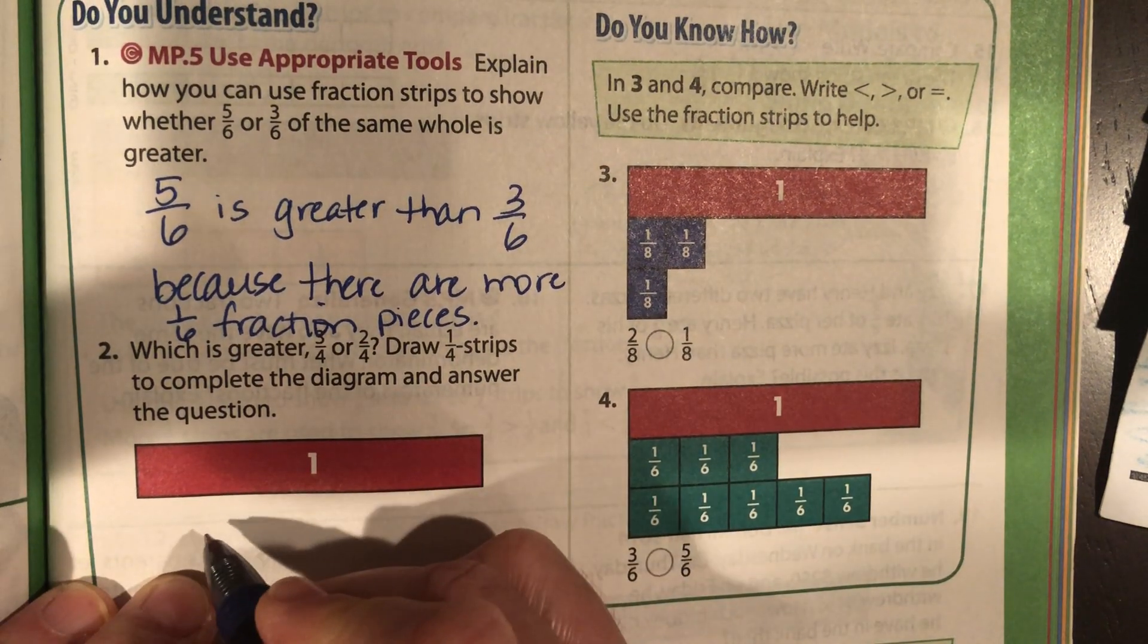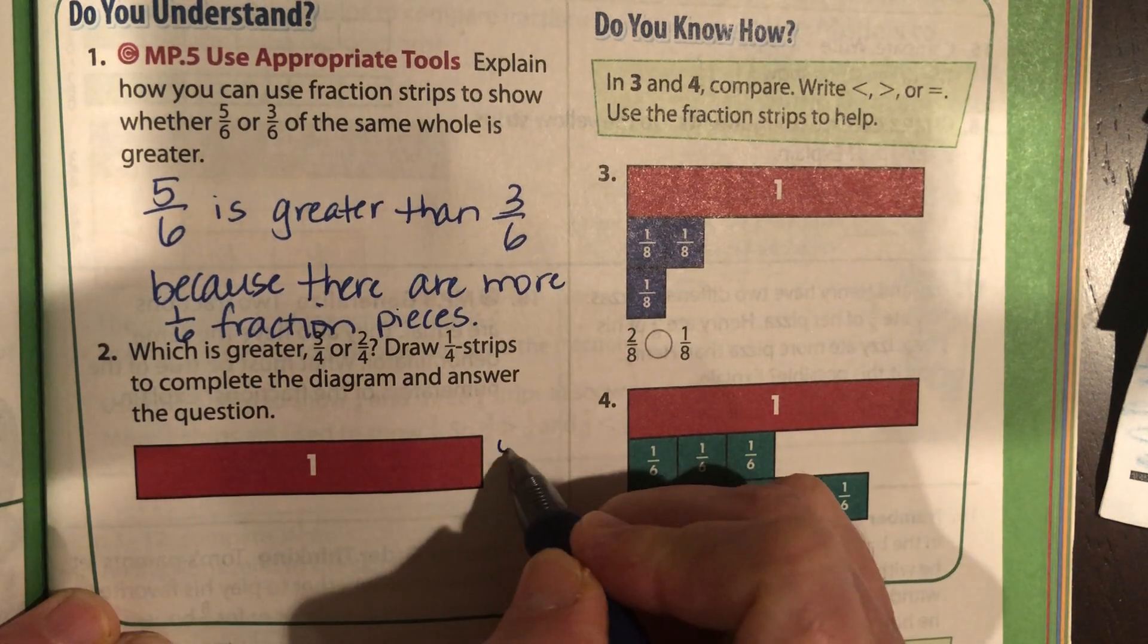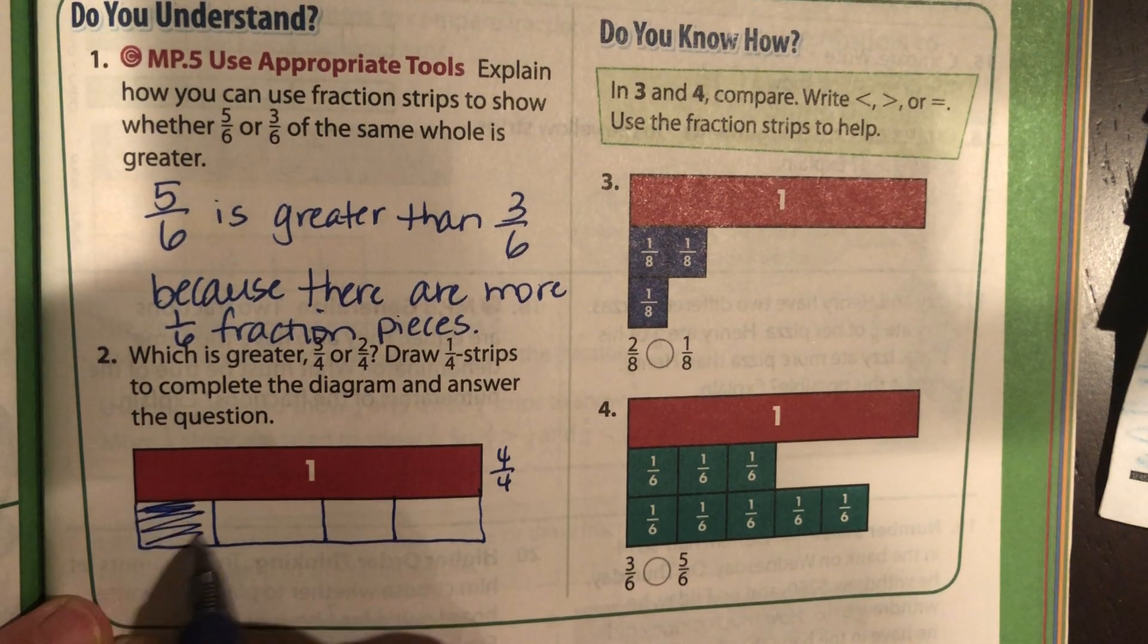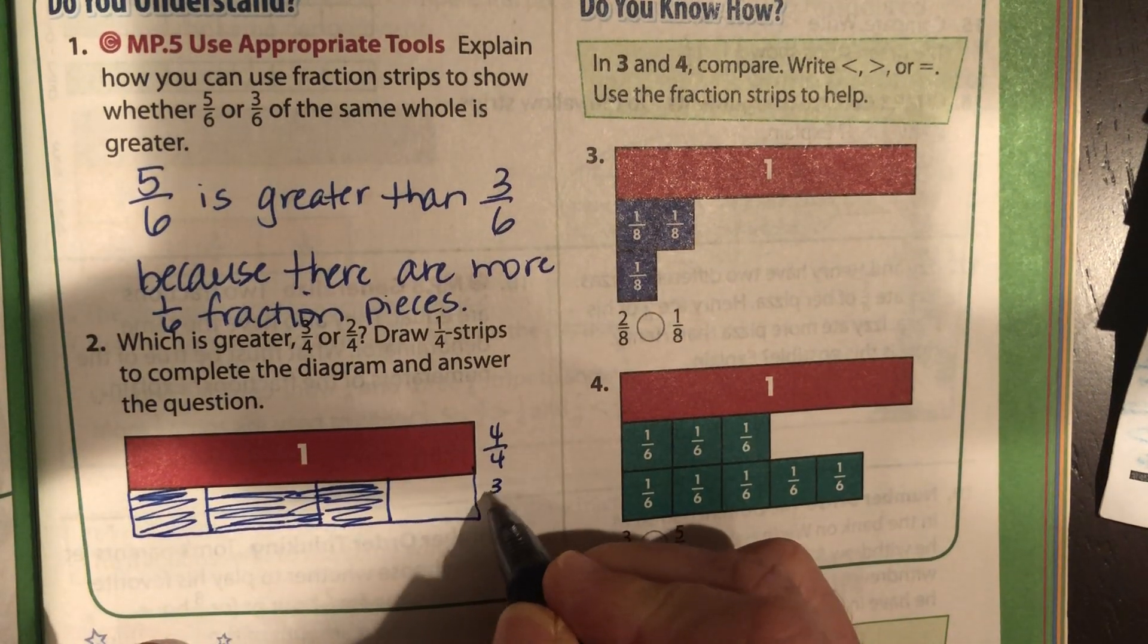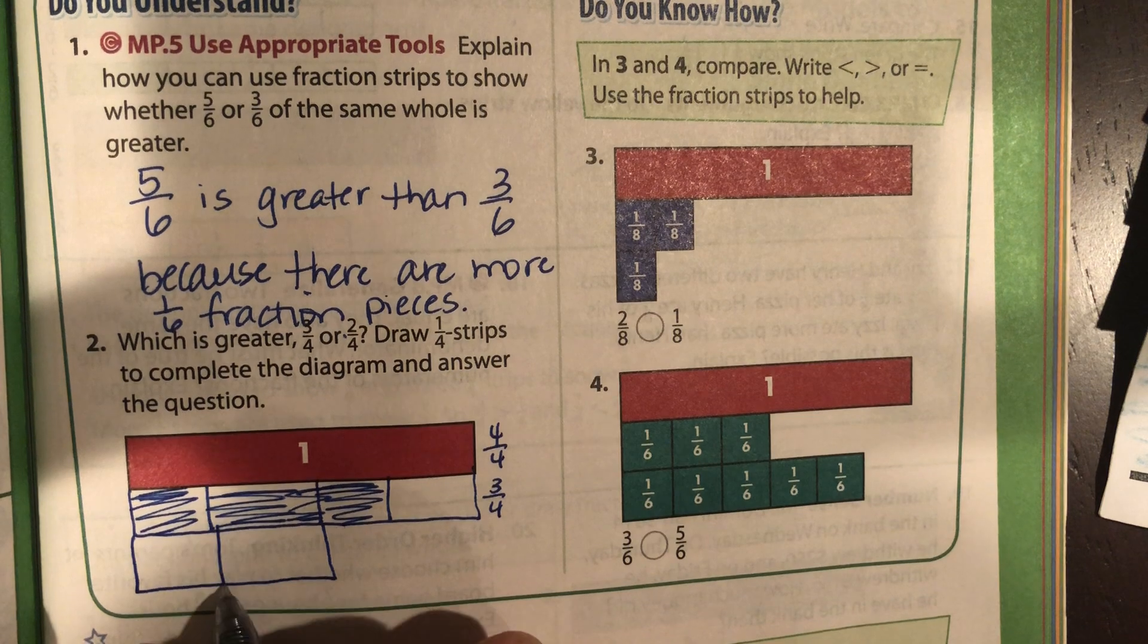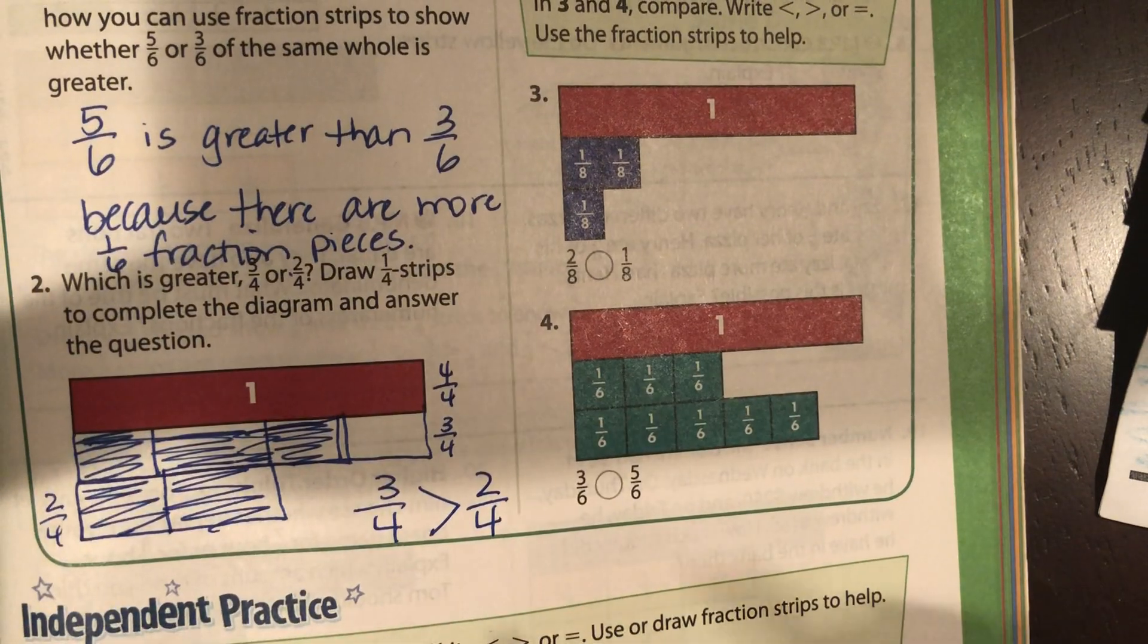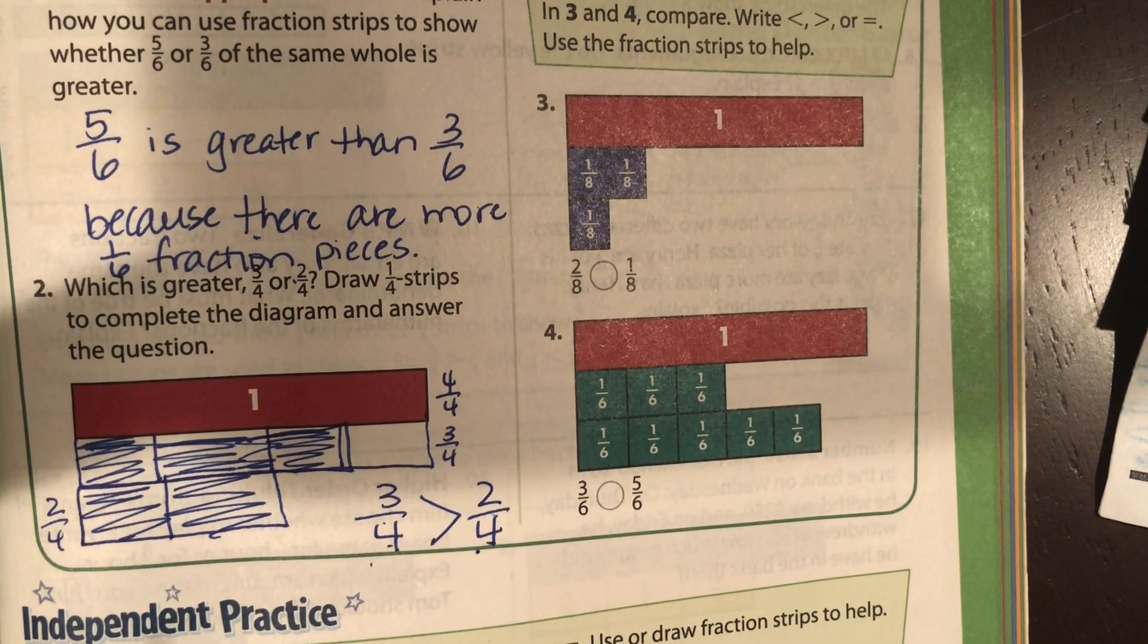Which fraction is greater, three-fourths or two-fourths? Draw one-fourth strips to complete the diagram and answer the question. This whole thing is going to be four-fourths. So I would go like that. This is half, split in half, split in half. So this is going to be three-fourths. You're just going to ignore that one because it's only three of the fourths, compared to two-fourths. Which one is greater? Clearly three-fourths is greater than two-fourths. Again, you have to pay attention that the denominator is the same. When the denominator is the same, we are easy-peasy lemon-squeezy, cleared for takeoff. You're just comparing the numerators and which one is bigger.